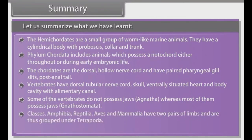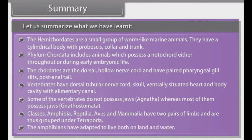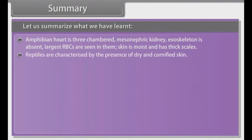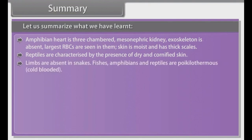Classes Amphibia, Reptilia, Aves and Mammalia have two pairs of limbs and are grouped under Tetrapoda. Amphibians have adapted to live both on land and in water. The amphibian heart is three-chambered with mesonephric kidneys, exoskeleton is absent, largest RBCs are seen in them, and skin is moist. Reptiles are characterized by dry and cornified skin; limbs are absent in snakes. Fishes, amphibians and reptiles are poikilothermous, i.e., cold-blooded, with no regulatory system of body temperature.